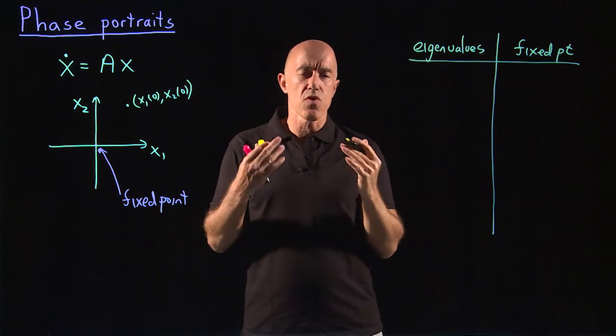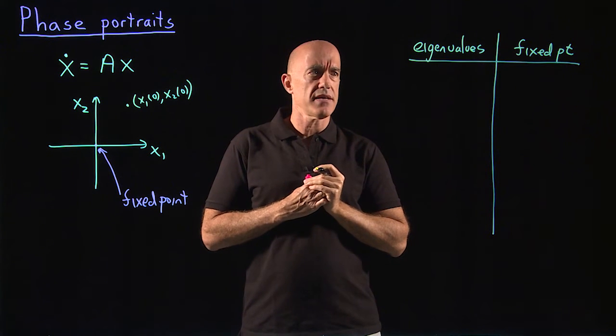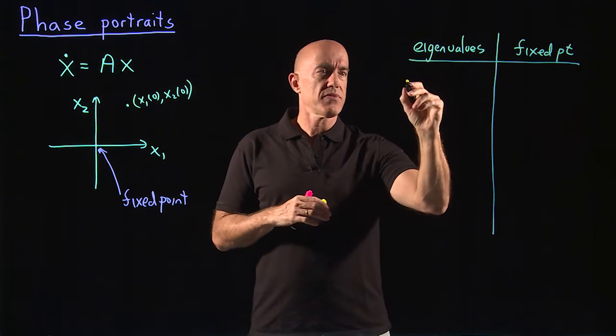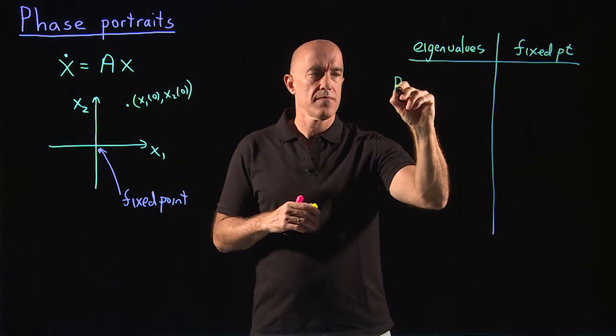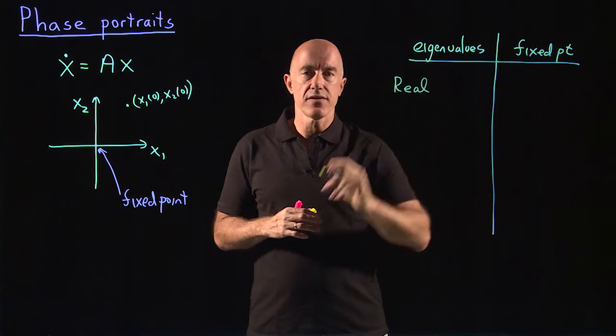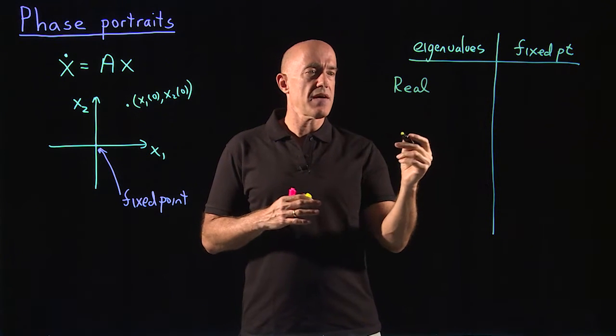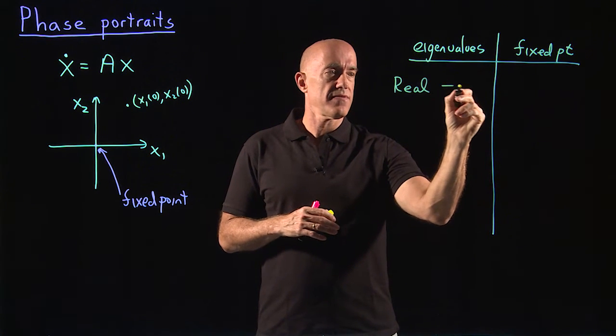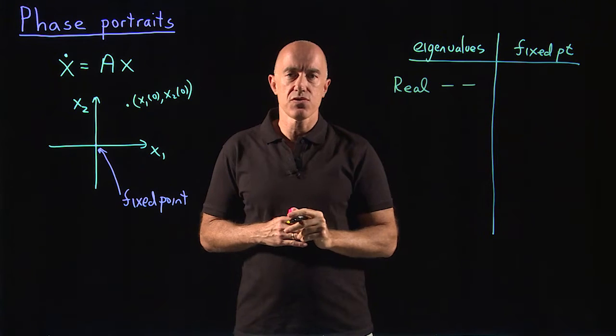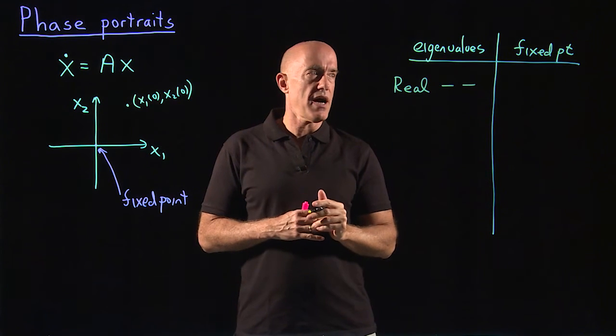So what could the eigenvalues look like? They can be real. So let's say real eigenvalues. So two real distinct eigenvalues. And they can both be negative. So two negative real eigenvalues.